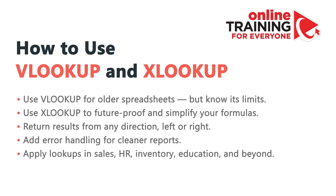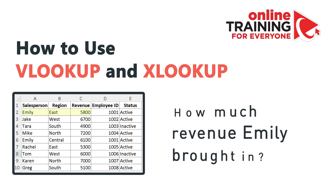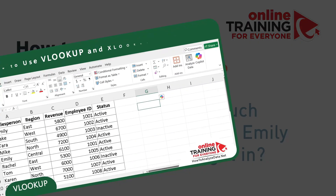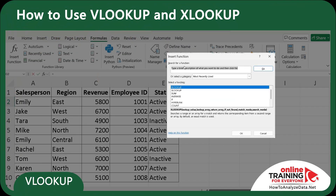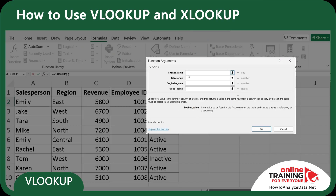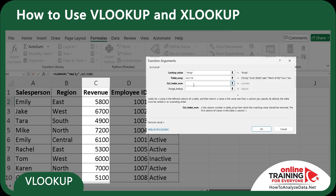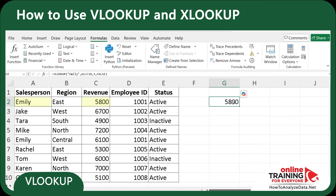In many everyday workflows, you'll need to quickly find and retrieve information from a table of data. Let's say you're reviewing a sales report and want to know how much revenue Emily brought in. Instead of scrolling, let's use a lookup formula to fetch it instantly. Let's start with VLOOKUP — navigate to Formulas and Insert Function, find VLOOKUP on the list. For the lookup value we'll use Emily, for the table array A2 through C10, for the index column 3 because revenue is in column C, and for the range lookup we'll enter false to ensure an exact match. VLOOKUP retrieved the correct value from cell C2.